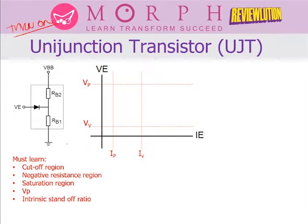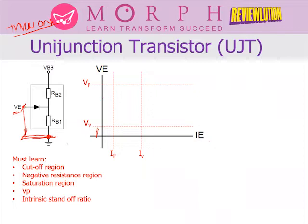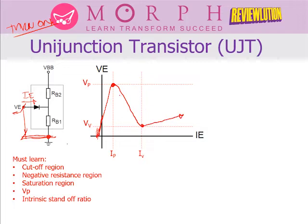To turn on your UJT, you apply a voltage known as VE from the emitter to base 1. We'll put a voltage here and figure out how and when it will turn on. As we increase the VE, there will be no significant IE — until the VE reaches a certain point. Once that point is reached, as we continue to increase VE, the drop across the emitter to base 1 will decrease as the current increases, until the current rises sharply. That is the graph of the UJT.